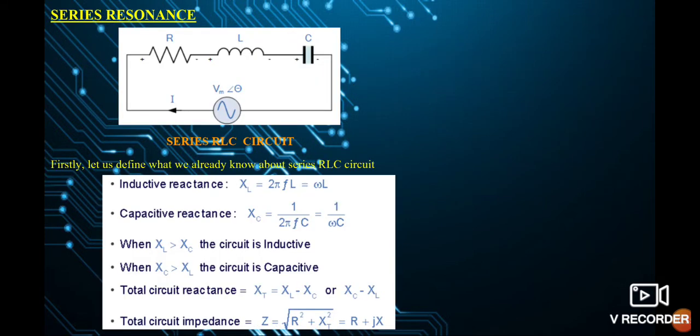Given is the diagram for a series resonance circuit — that is, a series RLC circuit. We have the passive components R, L, and C connected in series with an AC voltage source. In an RLC circuit, inductive reactance is given by XL equals omega L, or substituting omega with 2 pi F, it gives us 2 pi F into L. Similarly, for capacitive reactance, XC equals 1 by omega C, that is 1 by 2 pi F into C.